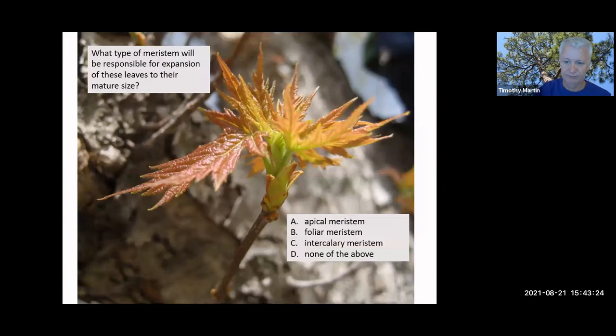So that's an example of that expanding leaf. So what type of meristem is responsible for expansion of these leaves to their mature size? It's an apical meristem, a foliar meristem, intercalary, or either of those. So it's an intercalary meristem, as I noted earlier.